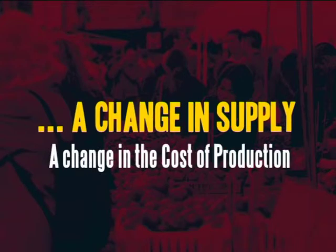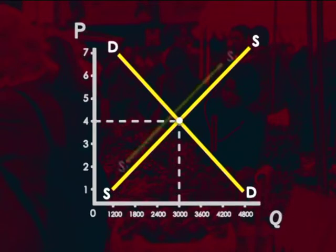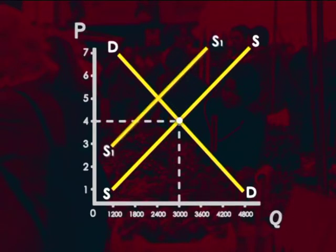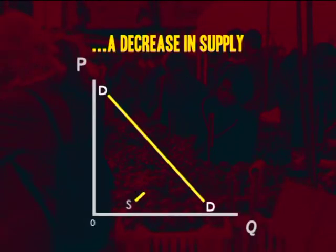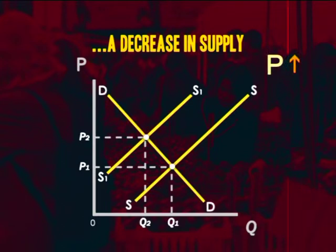What about an increase in the cost of production? An increase in production costs causes a drop in supply — if it's more expensive to produce, suppliers cut back on production. This decrease in supply is reflected in a leftward shift of the supply curve, causing excess demand and gradually forcing prices to rise. This correction continues until a new equilibrium is reached at a higher price and lower quantity. Any factor other than price which decreases supply will cause equilibrium price to rise and equilibrium quantity to decrease.